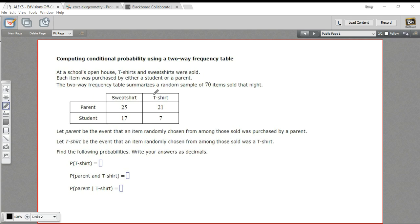In this case, we have items of clothing that were sold at a school open house, and the categories are either parent or student, or sweatshirt or t-shirt. So did a parent or a student buy it, and was it a sweatshirt or was it a t-shirt?